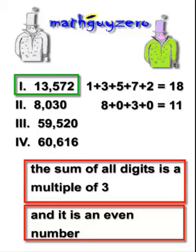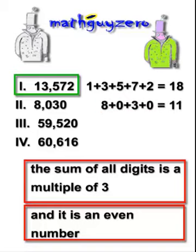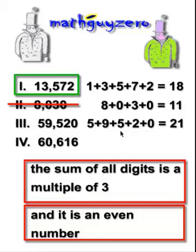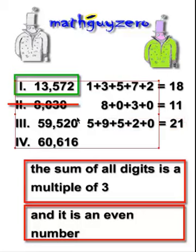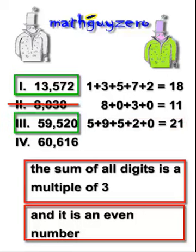Dropping down to the next one: 8 plus 0 plus 3 plus 0 is 11. That is not divisible by 3, so stop right there. The next one: 5 plus 9 plus 5 plus 2 is 21. That is a multiple of 3, and it is even. So that one is good as well.